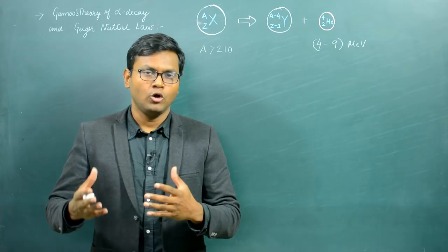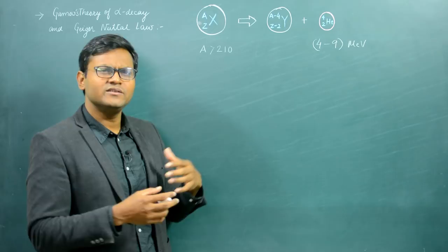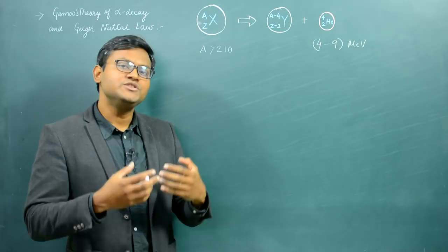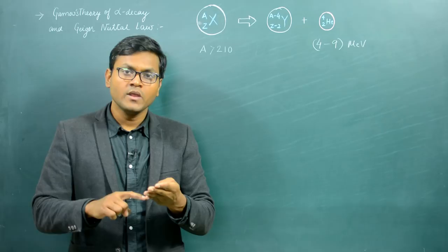Alpha decay is a kind of spontaneous radioactive decay process in which a large nucleus — usually having mass number greater than 210 — spontaneously undergoes a decay process which leads to the emission of an alpha particle. An alpha particle is nothing but a helium nucleus; it has two protons and two neutrons, so it has a mass number of four.